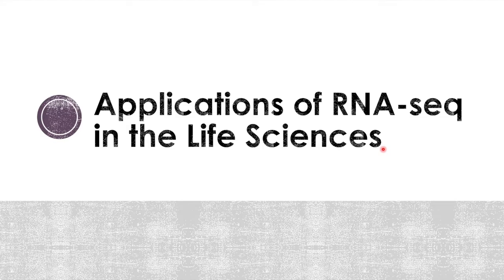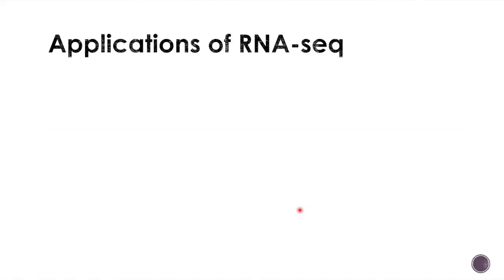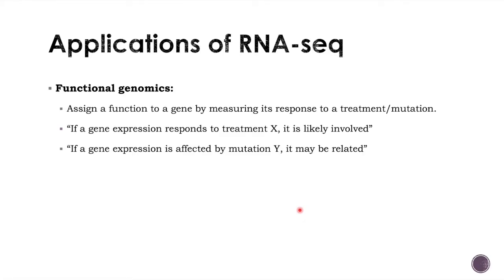Let's now see the applications of RNA-seq in the life sciences. A big part of the interest deals with gene functions inside the cell — the domain called functional genomics. For example, you can ask what a particular gene is involved in, such as signal transduction or enzymatic conversion of a metabolite. One method to assign a function to a gene is to study its regulation in response to a particular treatment, such as an external hormone applied to the growth medium. You can also mutate a gene and monitor the effect on other genes. A gene affected by a treatment compared to a control condition is likely involved in the adaptation of the cell to that treatment.